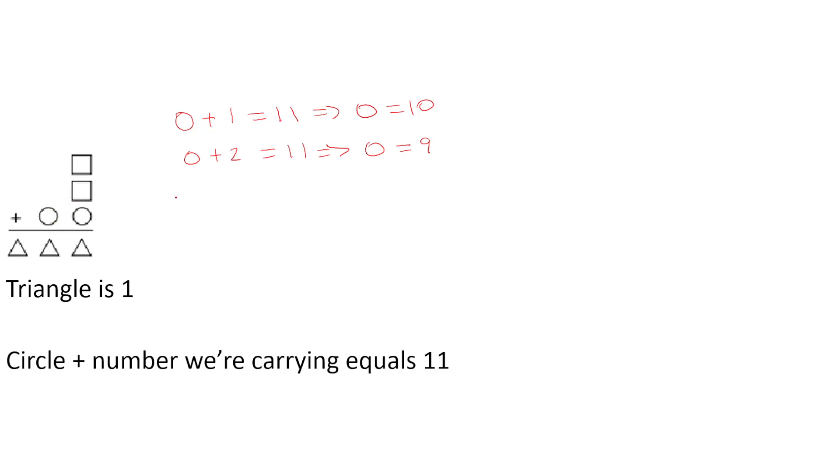Which means the square plus the square plus the circle starts with a 2, and we know the triangle is 1, so this has to end with a 21.